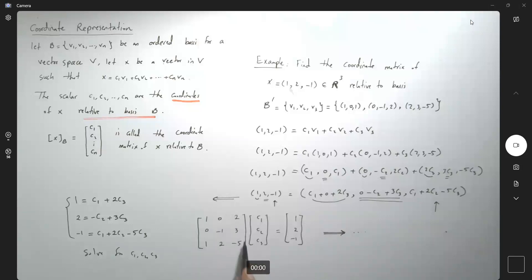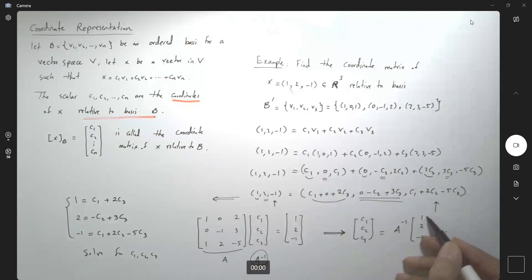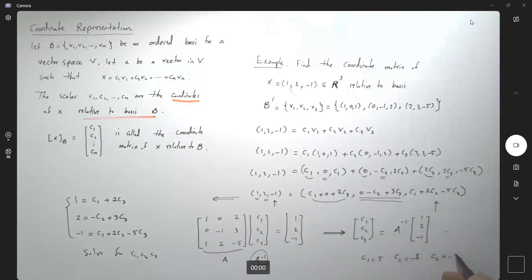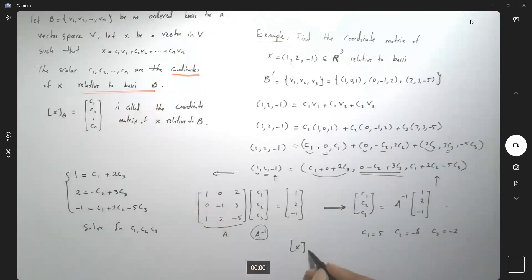Here you can find the inverse of this matrix. If you call it matrix A, find the inverse of A, and then (c1, c2, c3) = A⁻¹ · (1, 2, -1). Solving this gives c1 = 5, c2 = -8, and c3 = -2. So the coordinates of x relative to basis B' are (5, -8, -2).